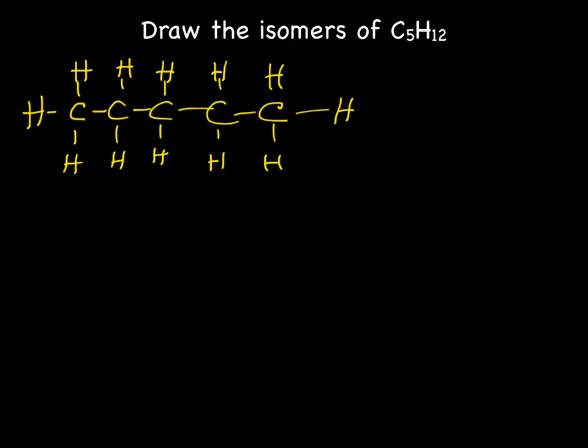And that's C5H12. So now what we're going to do is basically rewrite this again, but removing that carbon. So now we have four carbons. And we need to place the fifth carbon somewhere. We can't place it here because that's still the same chain, right?